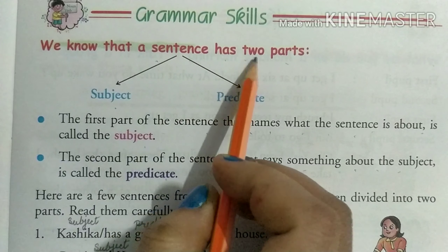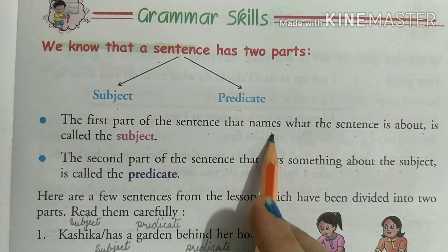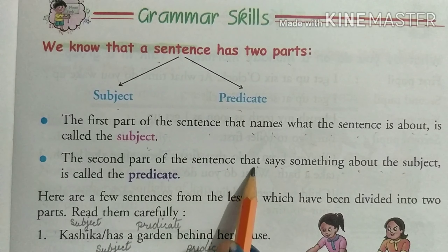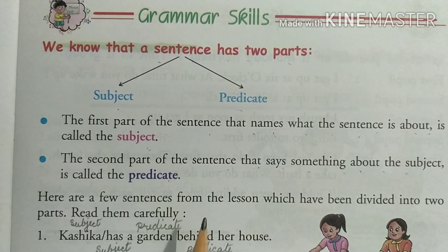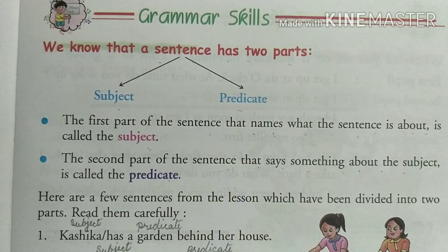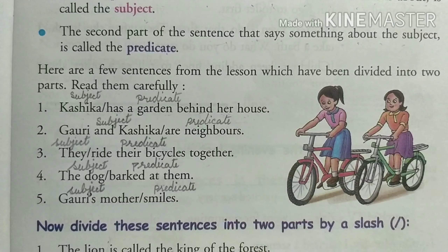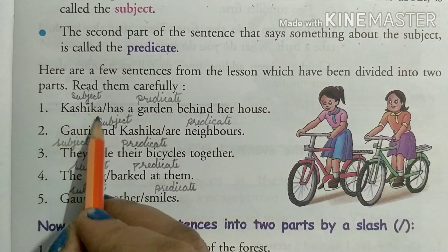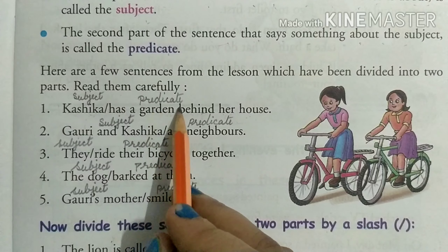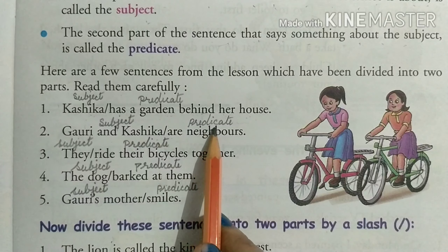We know that a sentence has two parts. Sentence ke do hisse hote hain. The first part of the sentence that names what the sentence is about is called the subject. The second part that says something about the subject is called the predicate.